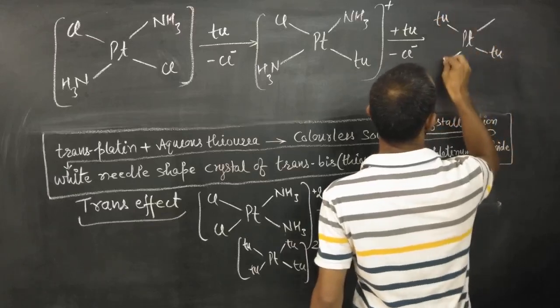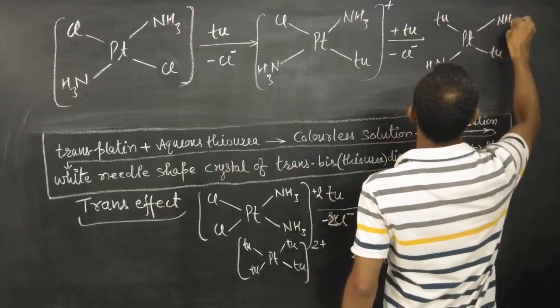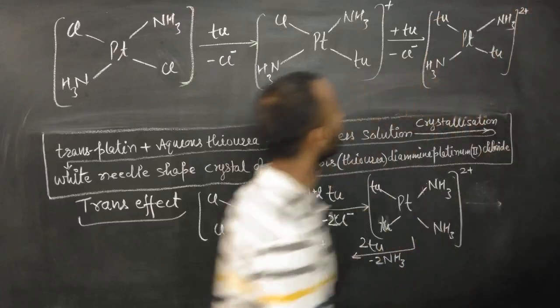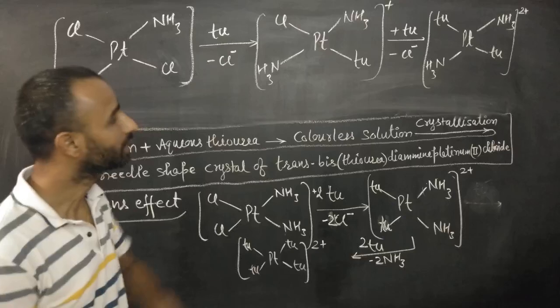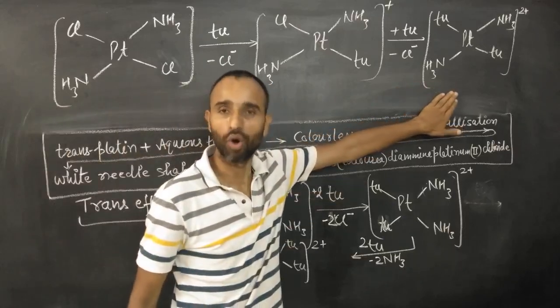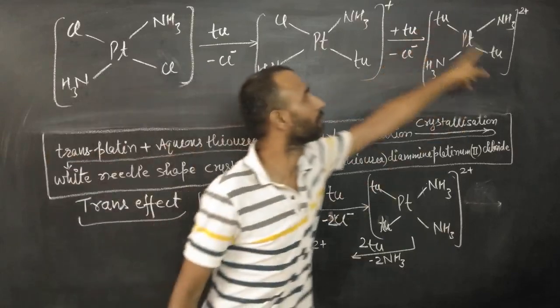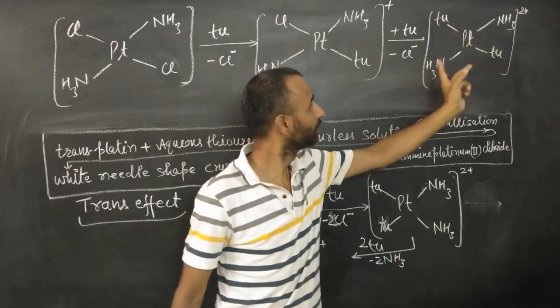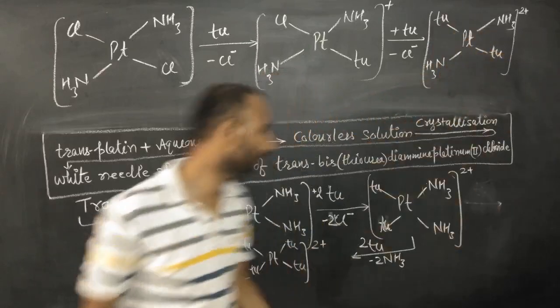trans-bis-thiourea-diamine-platinum(II) dichloride. So white needle-shaped crystals of this compound.